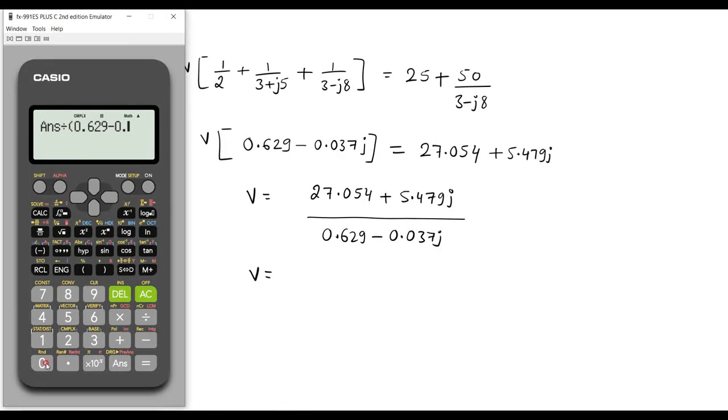So this will be the result, that is 42.353 plus 11.202J. So this is the result in rectangular form.